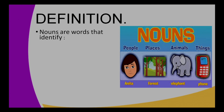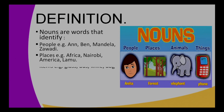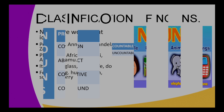Now let's start by defining nouns. What is a noun? Nouns are words that identify people. They identify places, they identify items, and they also identify feelings.